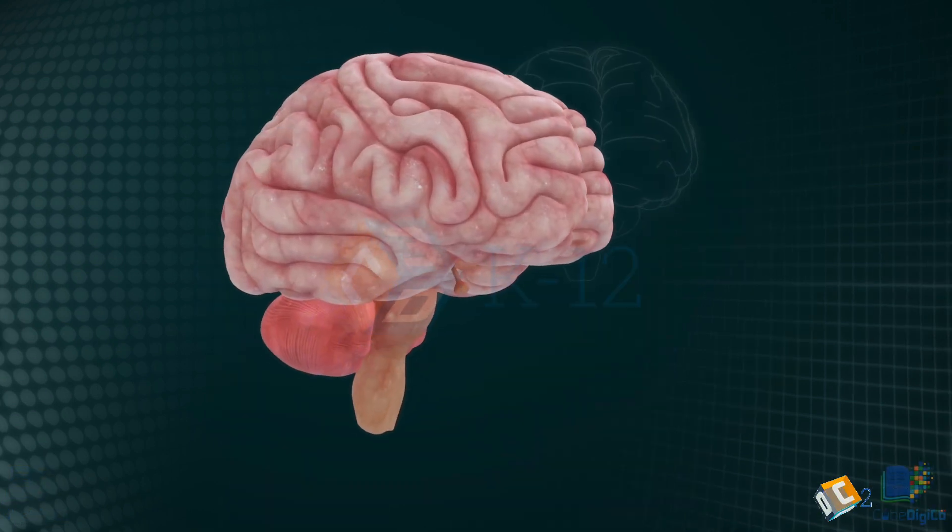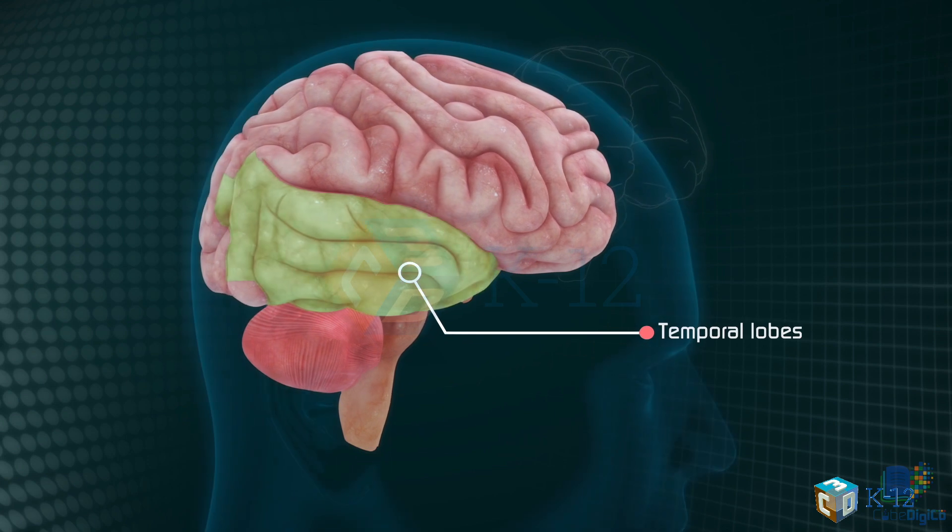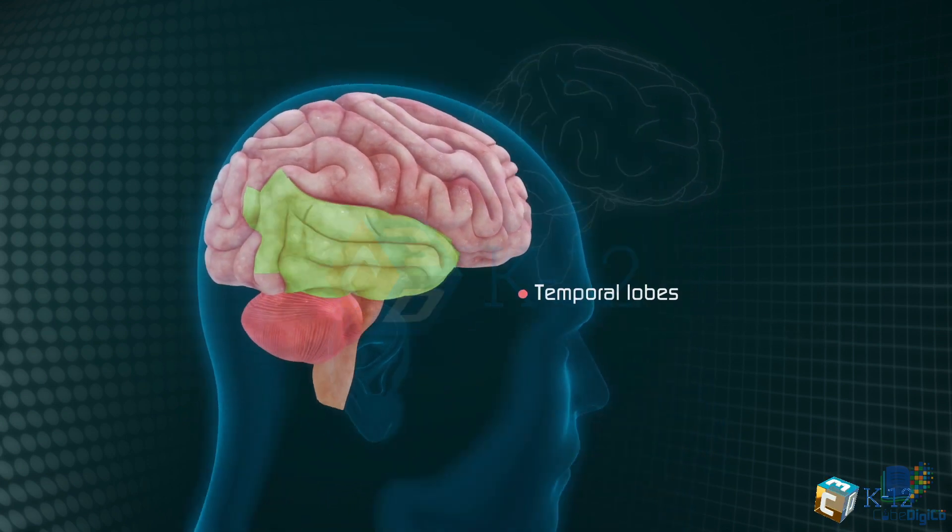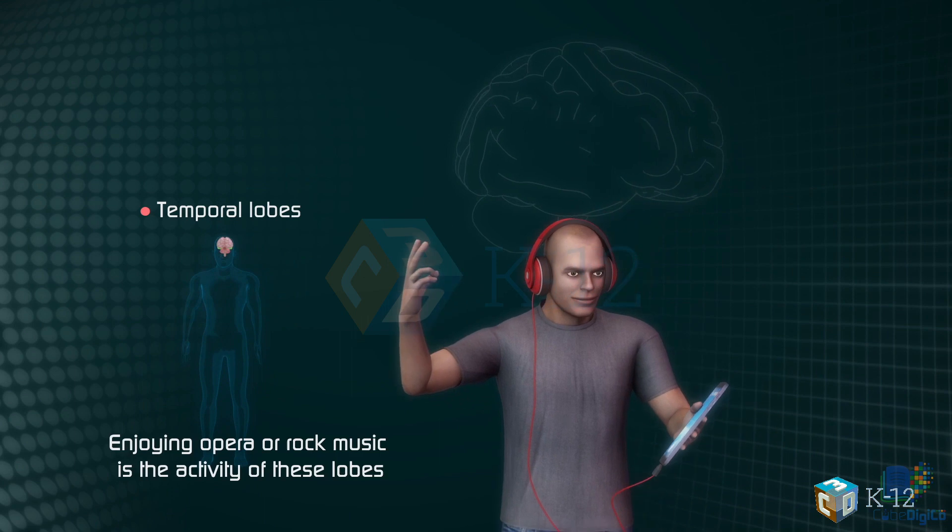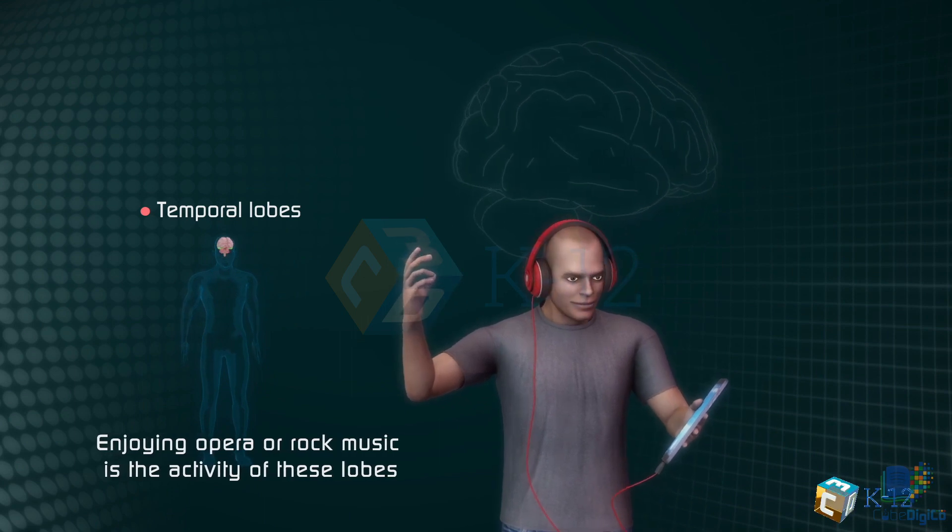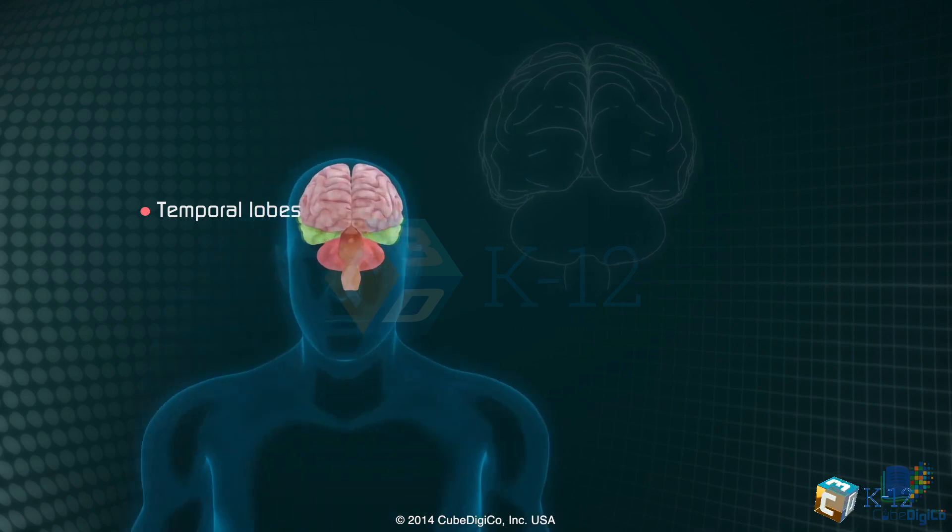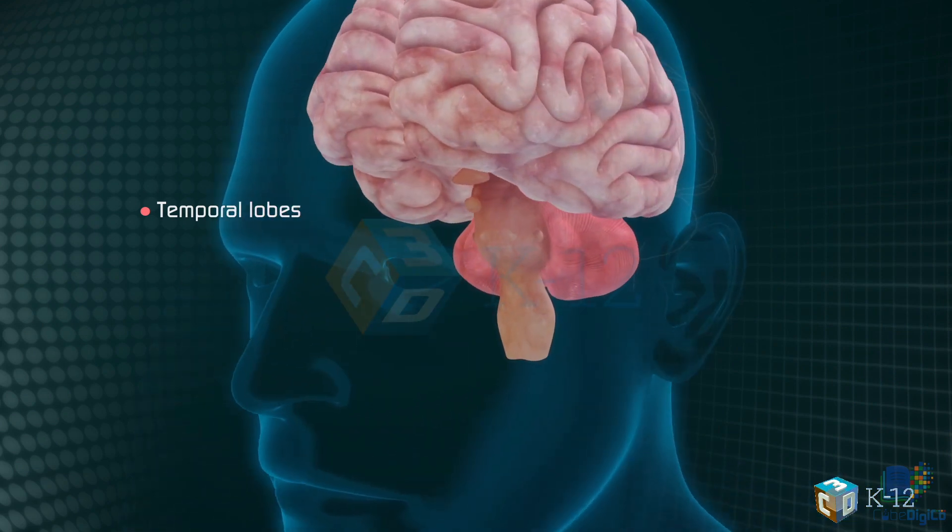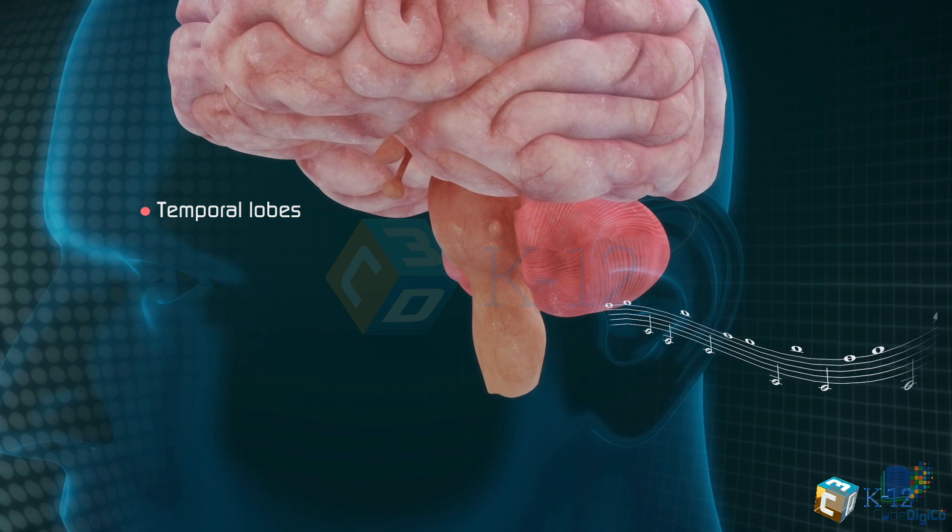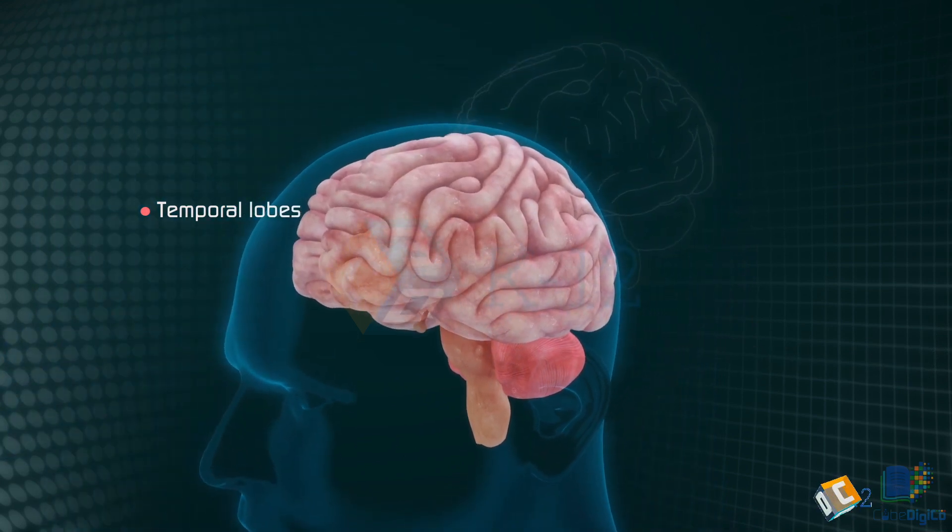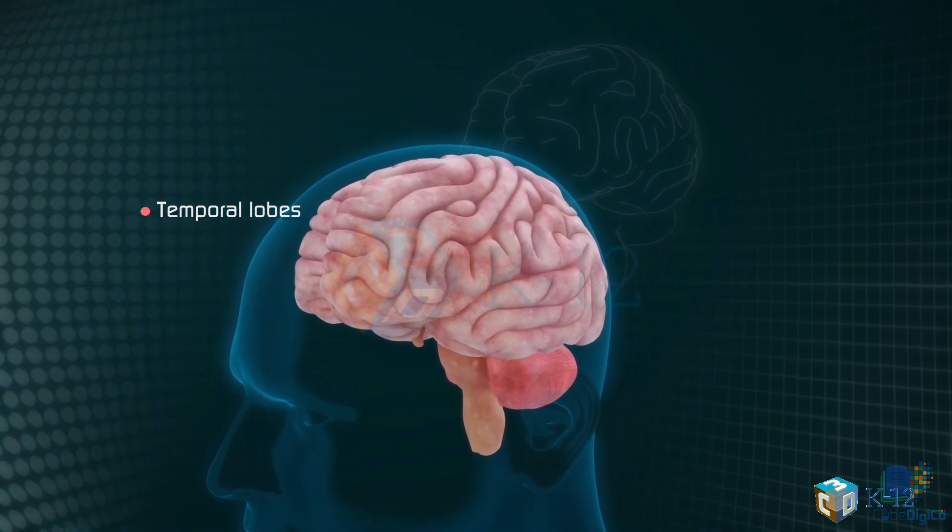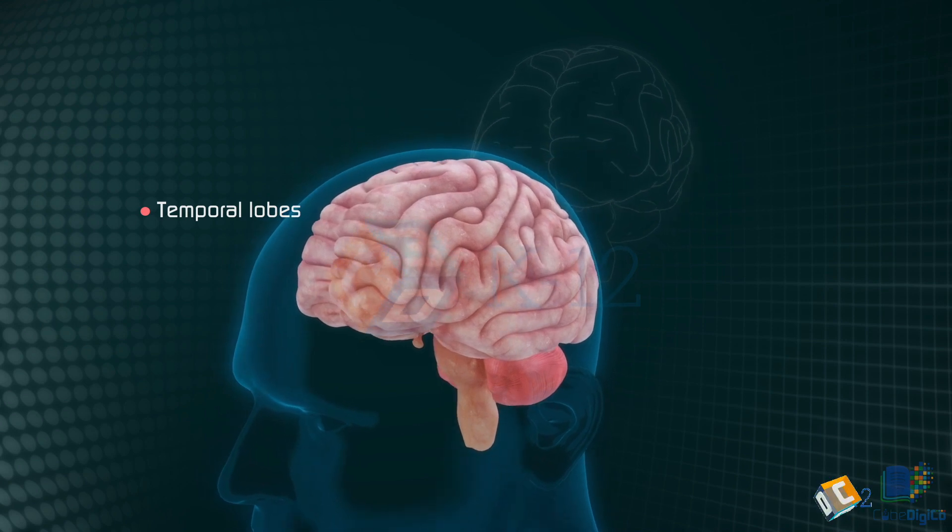The last lobes of the cerebral hemispheres are the temporal lobes, which lie in front of the visual areas and hide under the parietal and frontal lobes. Whether you enjoy opera or rock music, your brain responds through the activity in these lobes. At the top of each temporal lobe is an area responsible for receiving information from the ears. The underside of each temporal lobe plays a crucial role in forming and retrieving memories, including those associated with music.